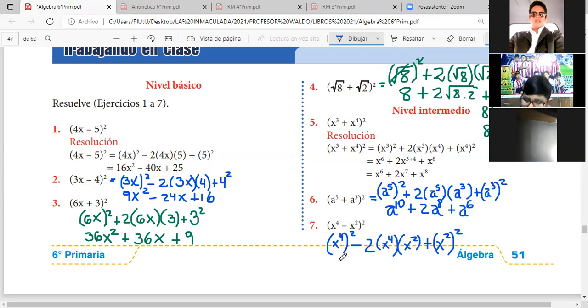Y resolvemos. Aquí será X, 4 por 2, 8. Aquí será menos 2 bases iguales, se suman los exponentes. Anotamos X y sumamos 4 más 2, 6. Más X, 2 por 2, 4. Listo, se acabó nuestro problema 7.